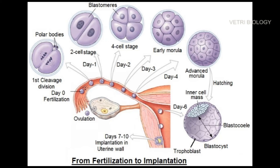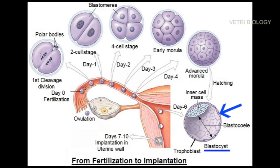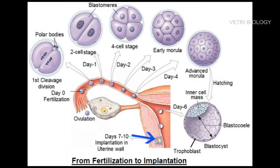After fertilization, the zygote undergoes repeated division and forms a fluid-filled hollow ball called blastocyst. It is composed of a single layer of large flattened cells called trophoblast and the inner cell mass of 20 to 30 rounded cells. This blastocyst is implanted in the uterine wall.